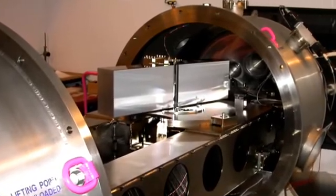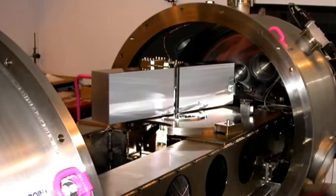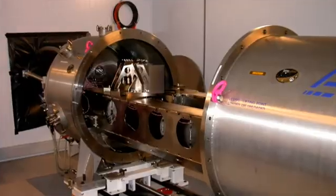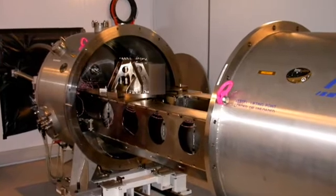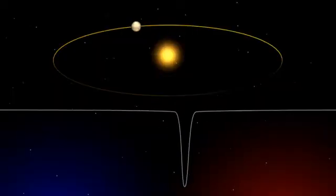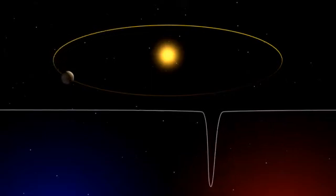HARPS was soon able to measure the back and forward motions of stars by detecting small changes in a star's radial velocity, as small as 3.5 km per hour, or a steady walking pace. Such precision is crucial for the discovery of exoplanets.